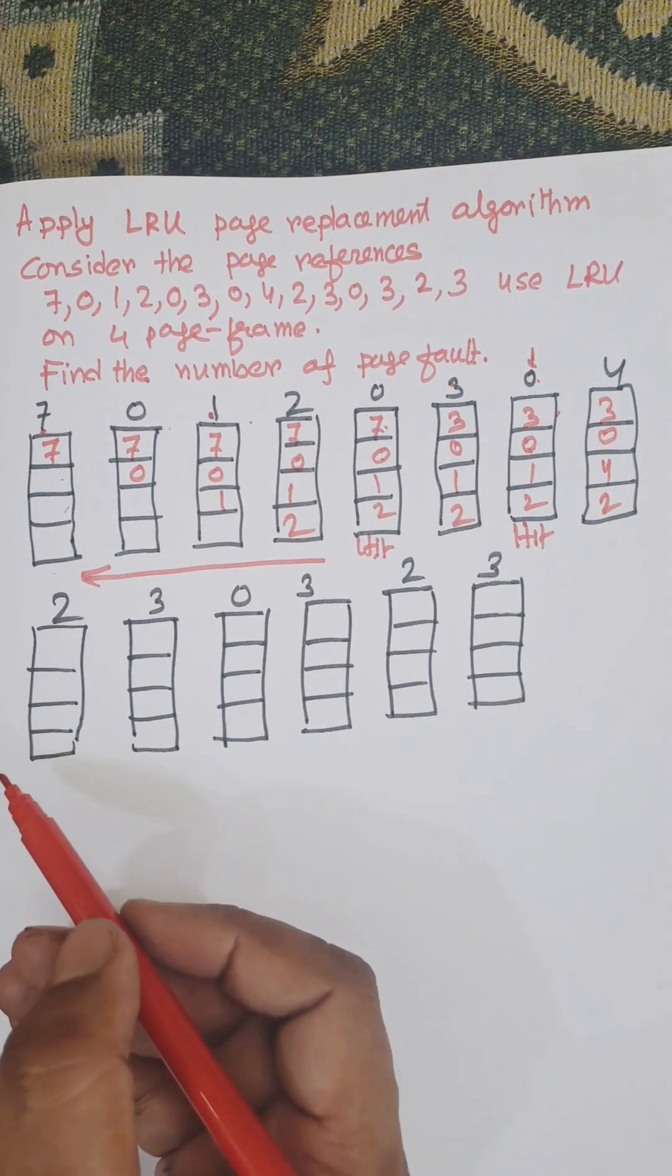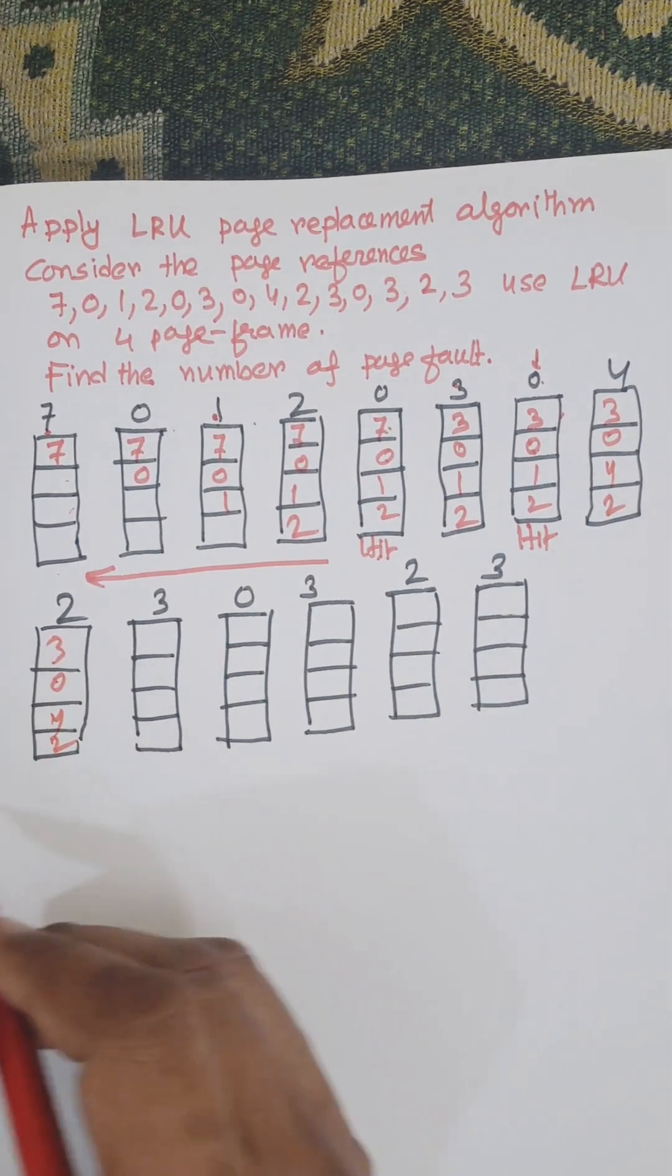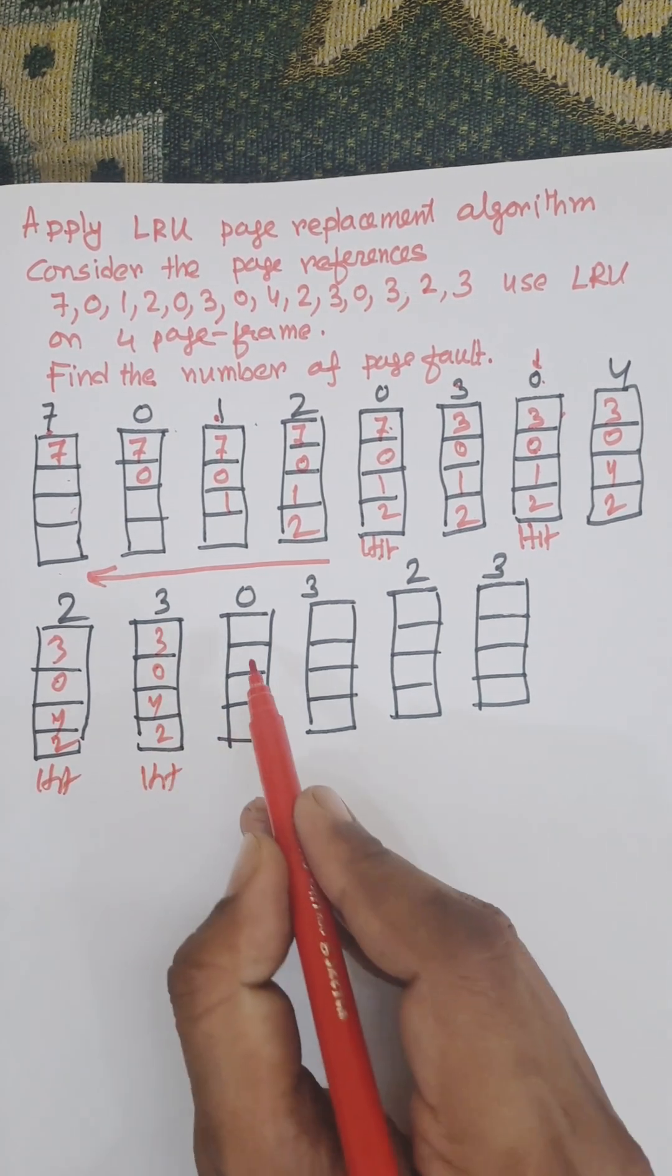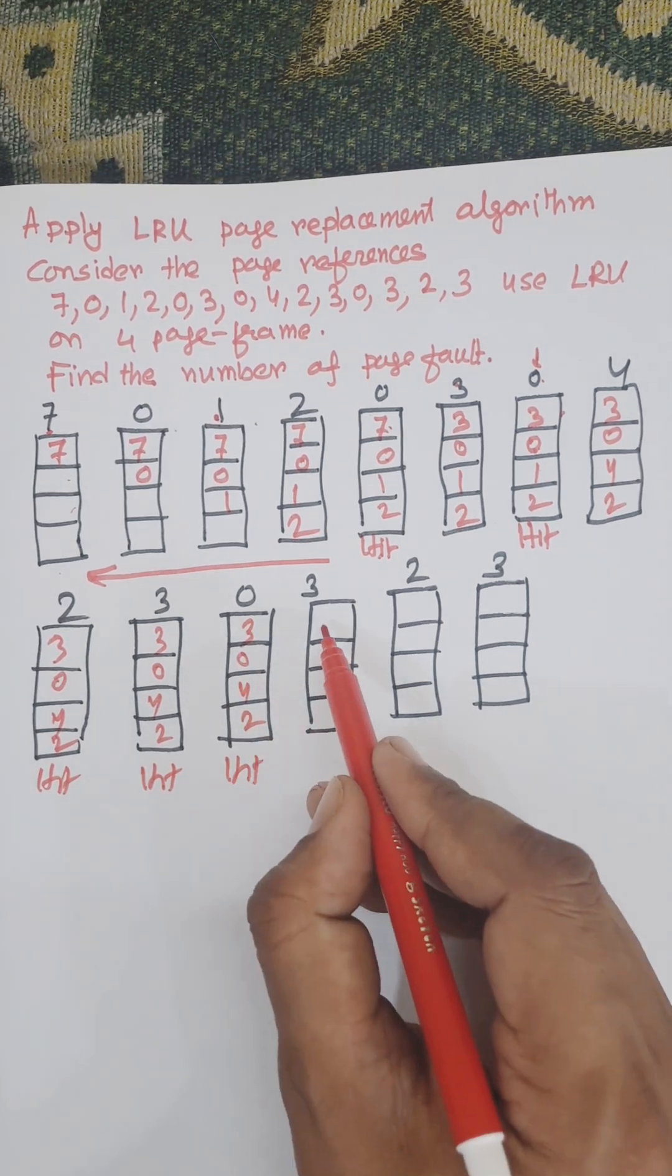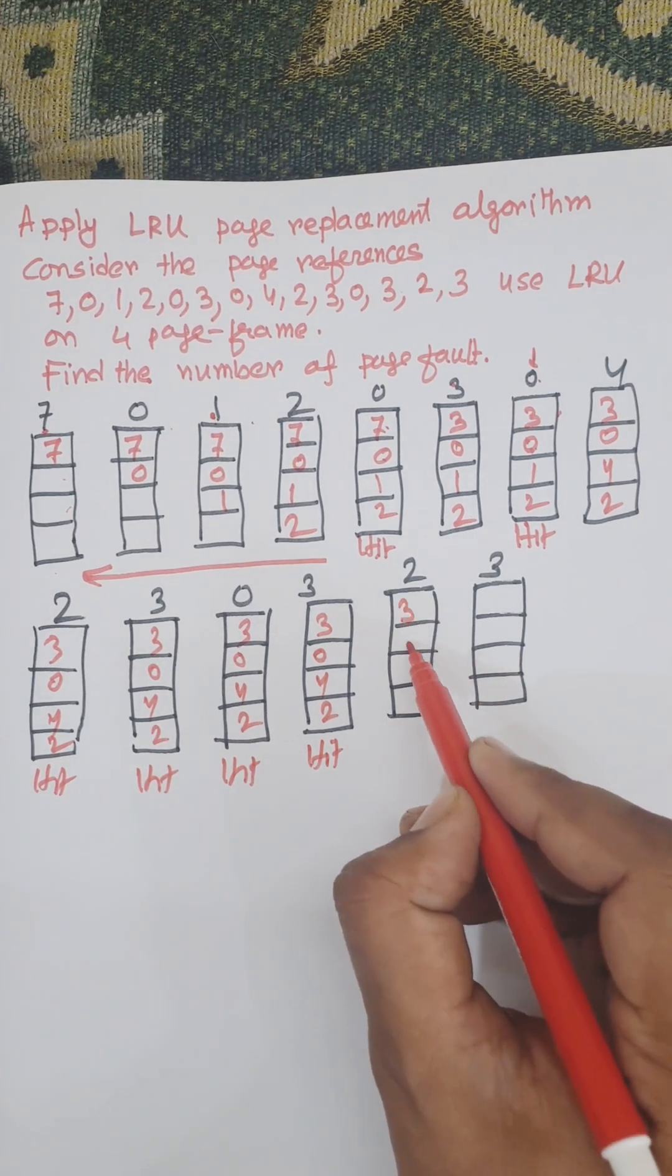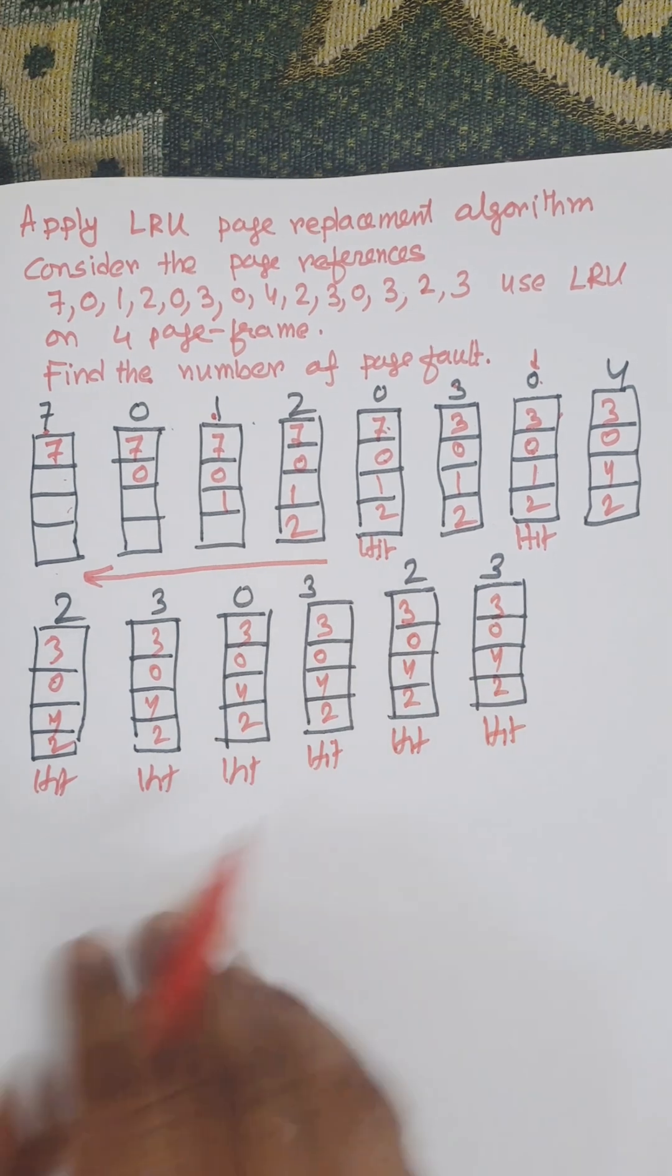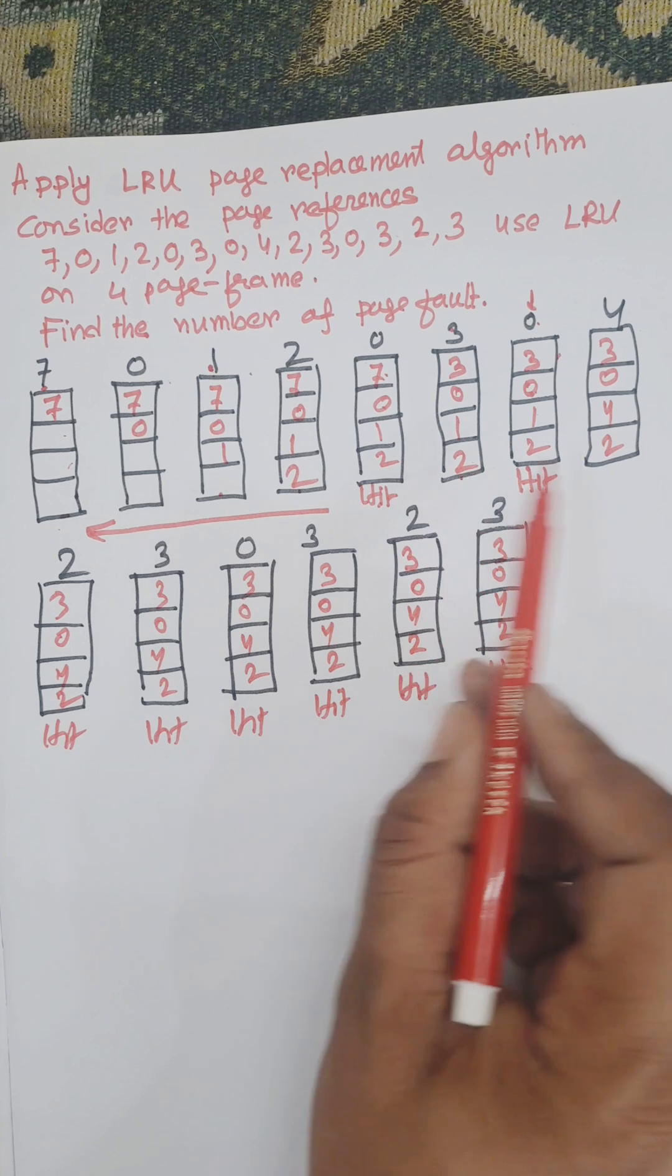Next, two is already available—that's a hit. Three is already available—hit. Zero is available—hit. Three is available—hit. Two is available—hit. Three is available—hit. The total number of misses is 1, 2, 3, 4, 5, 6.